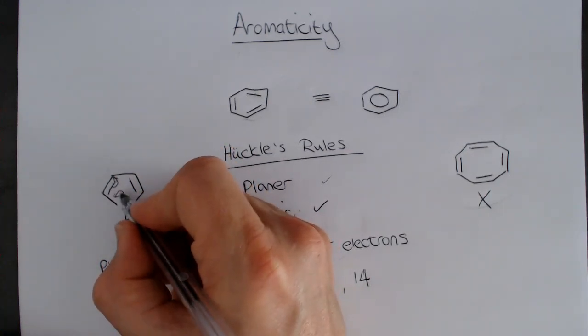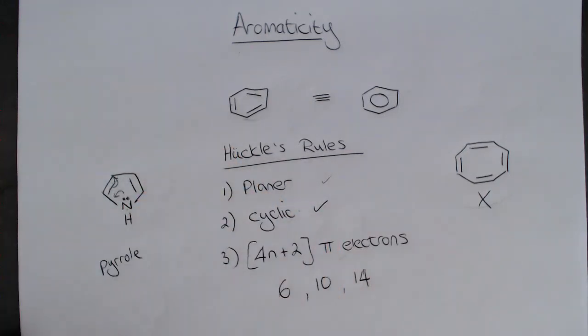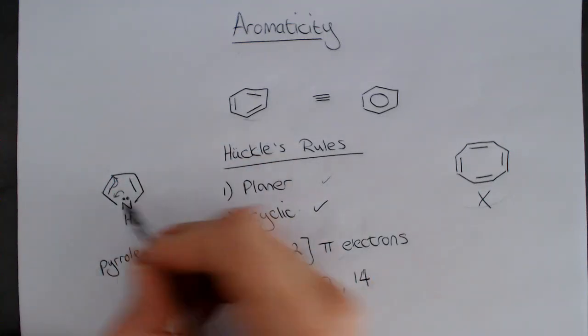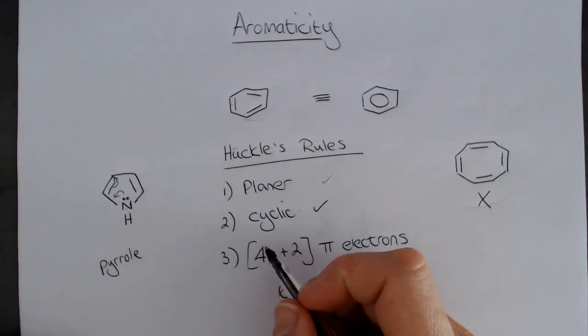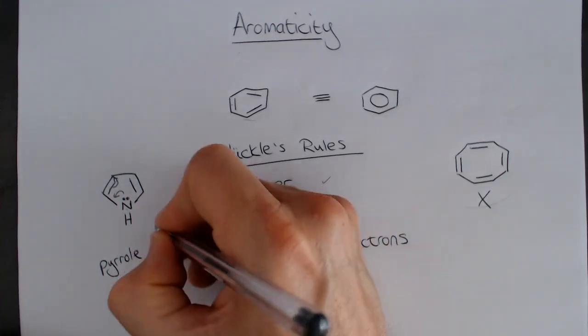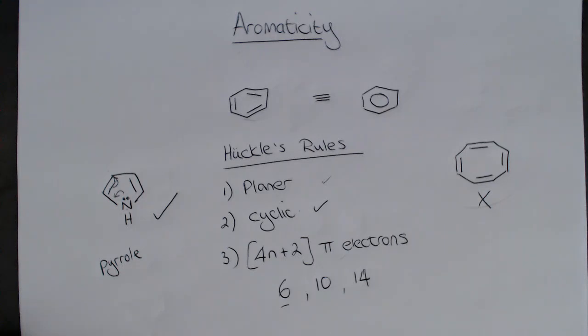In fact, those two electrons are part of the whole pi system. And that means that the number of electrons that are part of this system is actually 6, and this molecule is an example of an aromatic system.